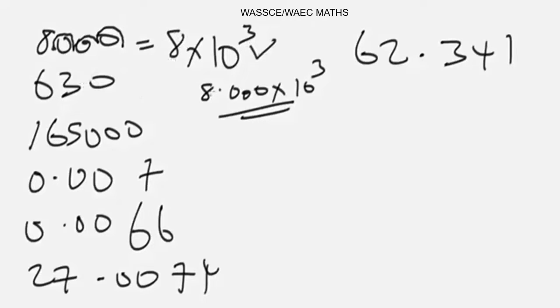For this second example, to express it as standard form, you start from here and go again: 1, 2. So it should be 6.3 times 10 to the power 2, since we moved two times backward.